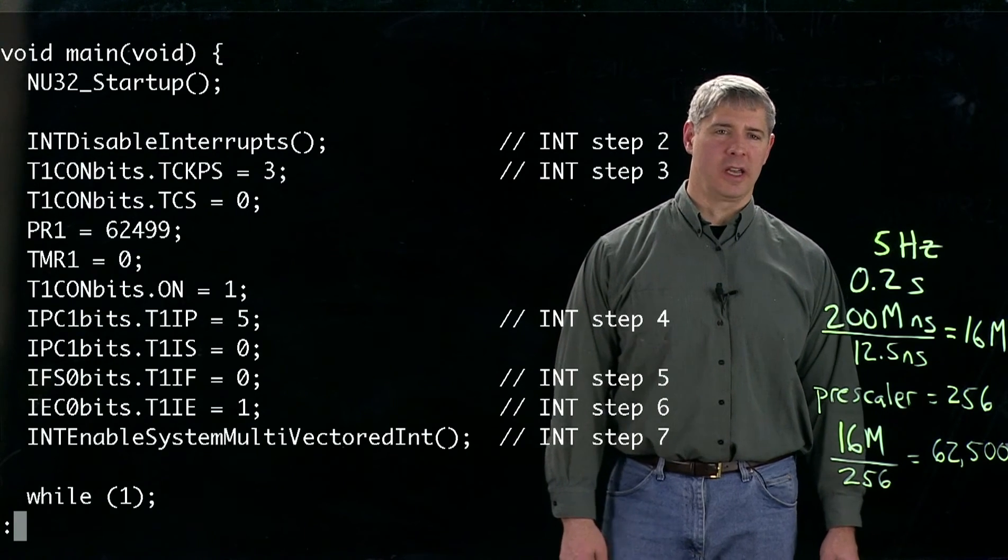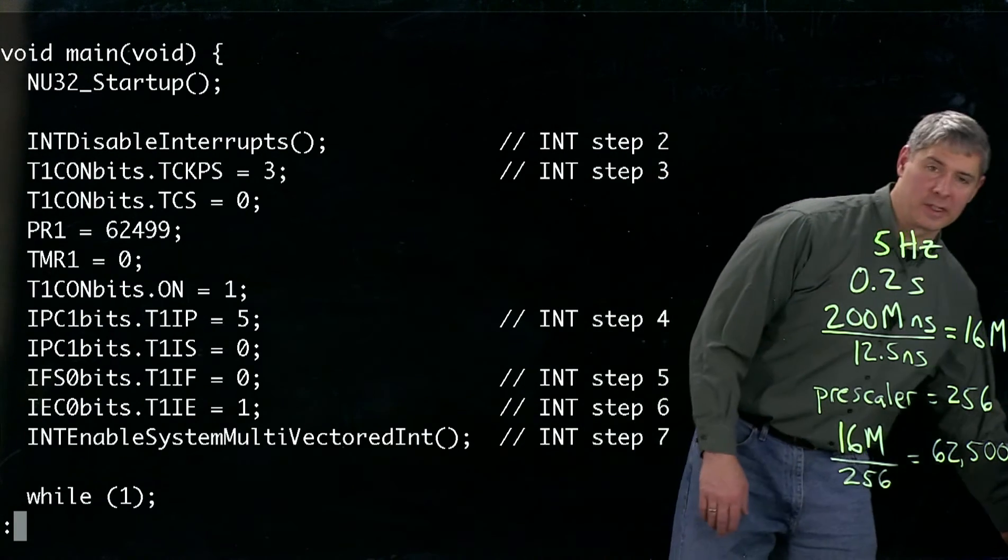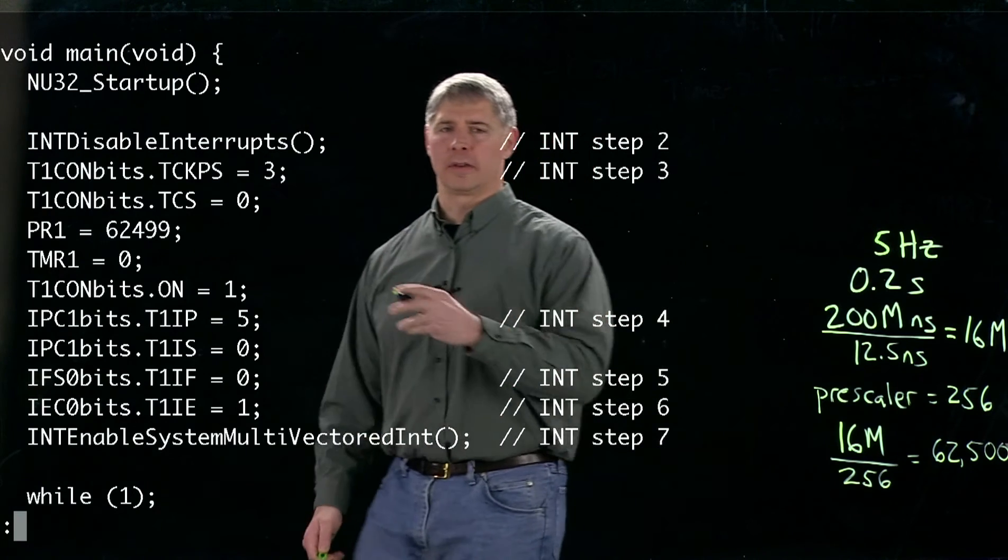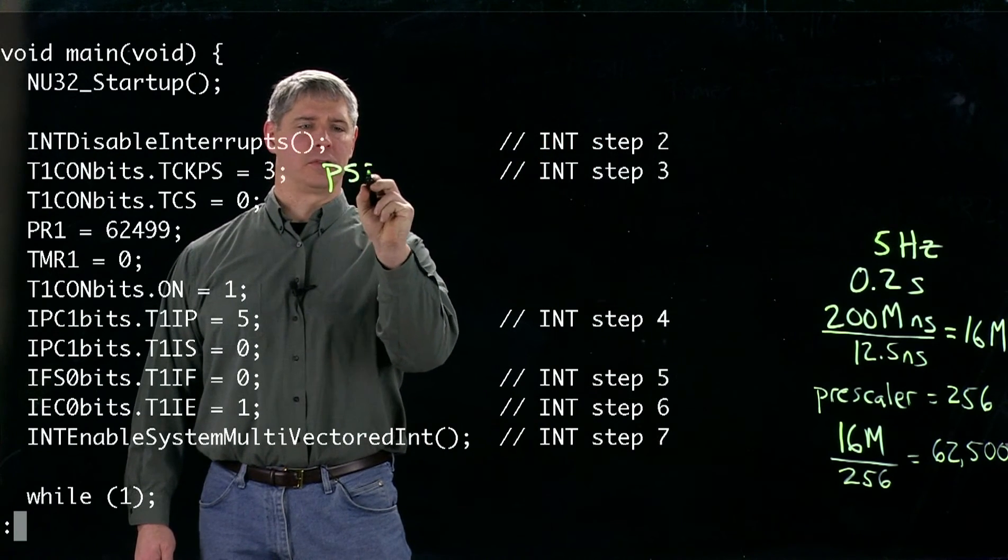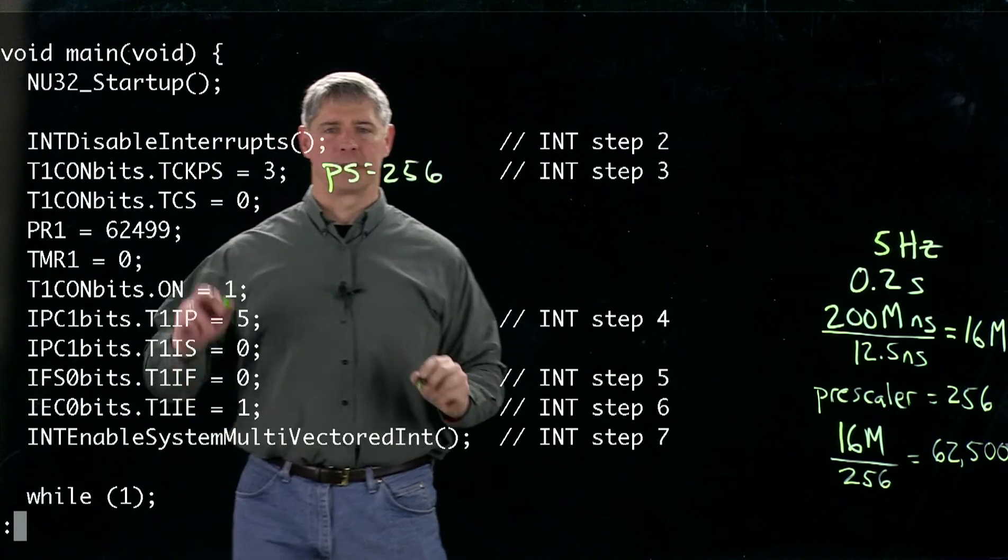going to do is we're going to first set the bits of that T1CON register that control the pre-scaler so that we choose a pre-scaler of 256. So this is PS equals 256, happens in this line here.